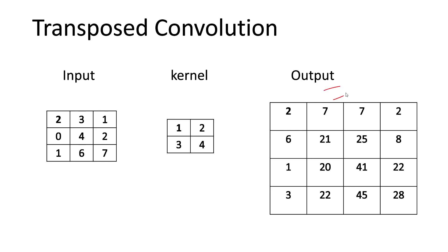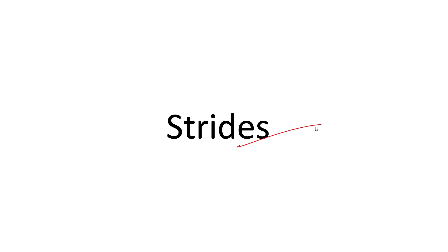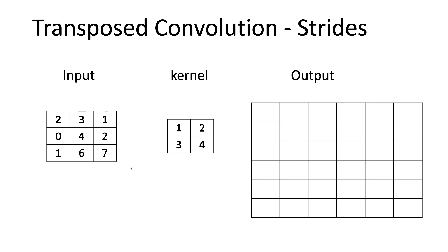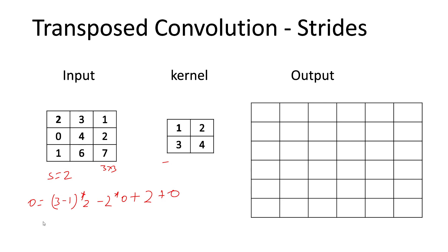Now let's look at stride. We need to figure out the output shape before multiplying. Here stride=2. The output shape formula: output = (input-1)*stride - 2*padding + kernel + output_padding. With input=3, stride=2, padding=0, kernel=2, output_padding=0: (3-1)*2 = 4, minus 0, plus 2, plus 0 = 6. So the output is 6x6, which you can already see on screen.